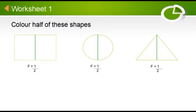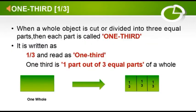In this worksheet you have to color half of these given shapes. You can color or shade any one part to show half. One third, or one by three: when a whole object is cut or divided into three equal parts, each part is called one third.